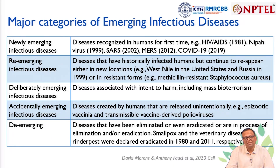Sometimes diseases emerge as a result of deliberate release. These are associated with mass bioterrorism. We do not have many examples, but there have been cases particularly with anthrax, which will be discussed later.